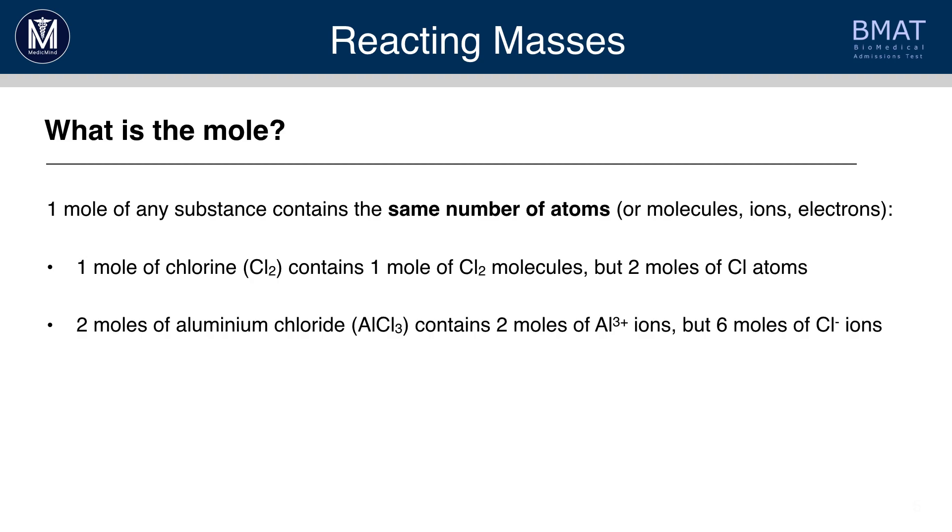So what's in a mole? Well, one mole of Cl2 contains one mole of Cl2 molecules, but two moles of Cl atoms. Two moles of aluminium chloride contains two moles of Al3+ ions, but six moles of Cl- ions.